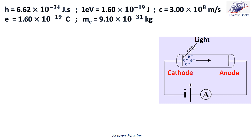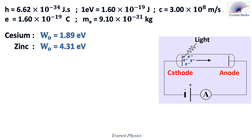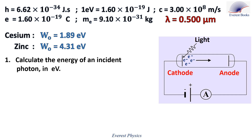We consider two photocells of cesium and zinc cathodes whose work functions are 1.89 eV and 4.31 eV respectively. We illuminate each of the above cells by a light of wavelength 0.5 micrometers in vacuum. Number 1: calculate the energy of an incident photon in electron volts.